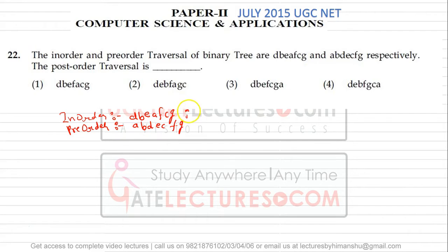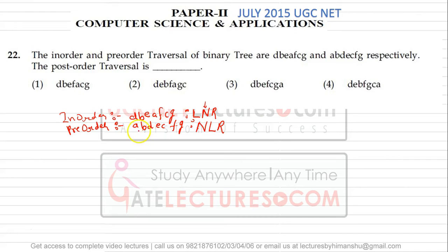According to in-order traversal, first we access the left, then we access the root, then we access the right. In pre-order traversal, we start with the root, then we add the left, then we add the right. So in pre-order, the first element is your root, then left, then right. In in-order, left comes first, then root, then right.